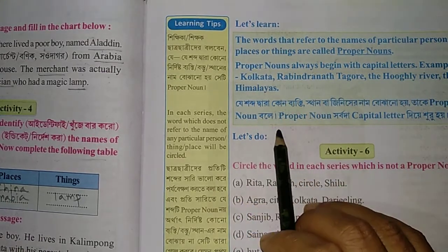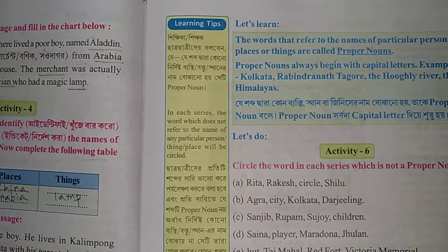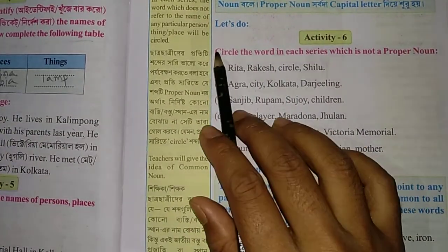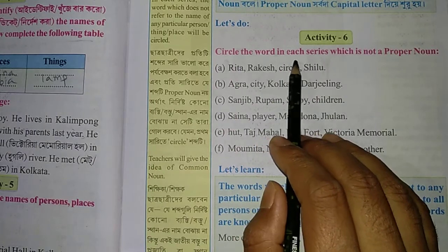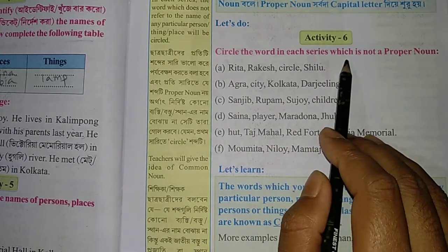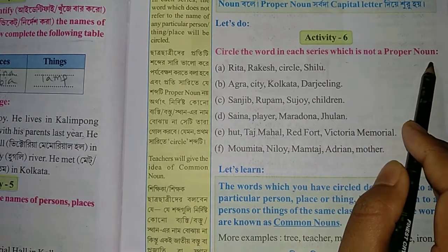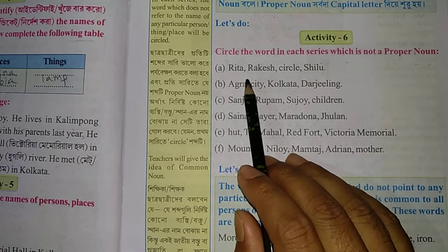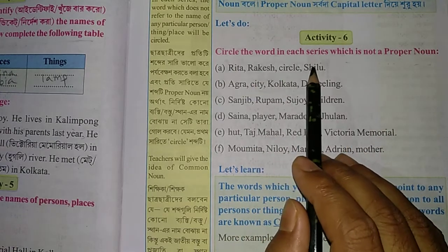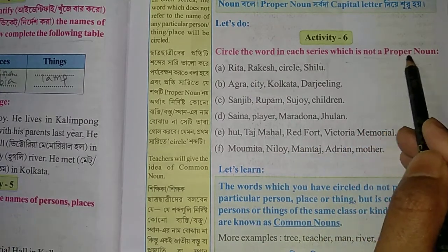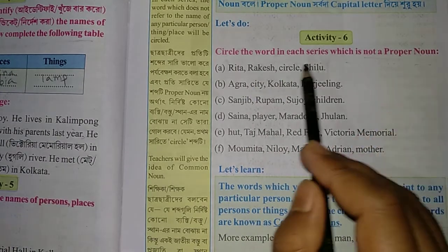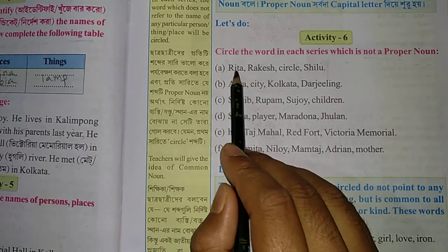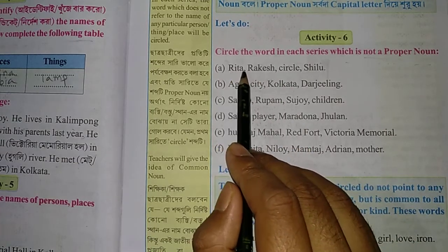Activity 6: circle the word in each series which is not a proper noun. A proper noun has its first letter as a capital letter. If a word does not have its first letter capital, it is not a proper noun.